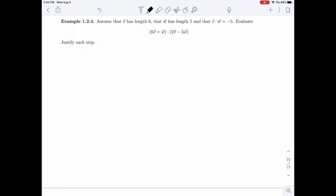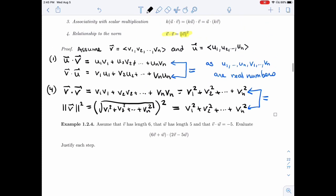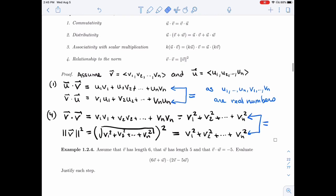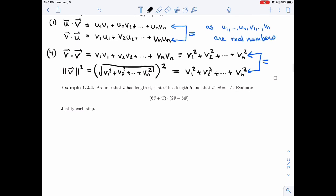All right, so now that we have these properties of dot product and we have proven them, what we'll do next is use them to actually do Example 1.2.4. All right, so in that example, let me write what we have.